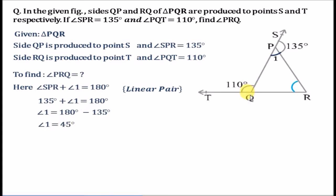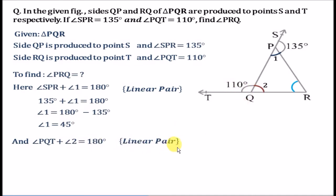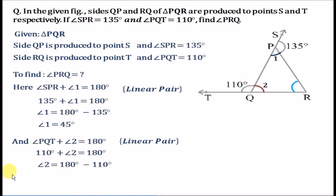Similarly, let us label the angle adjacent to angle PQT as angle 2. The sum of angle PQT and angle 2 equals 180 degrees because of the linear pair property. Putting the value: 110 degrees plus angle 2 equals 180 degrees. Taking 110 to the other side, angle 2 equals 70 degrees. So inside triangle PQR we now have the values of angle 1 and angle 2.